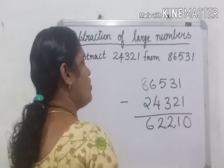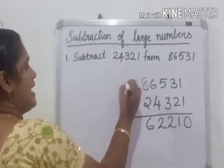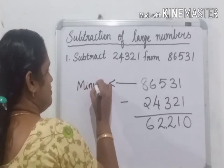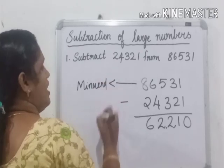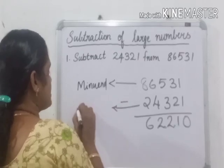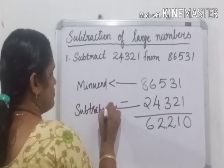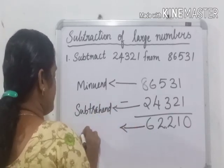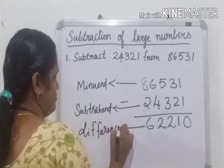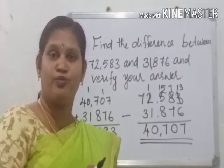62,210 is the answer. The larger number is called the minuend, the smaller number is called the subtrahend, and the answer is called the difference. In this first example, there was no borrowing.